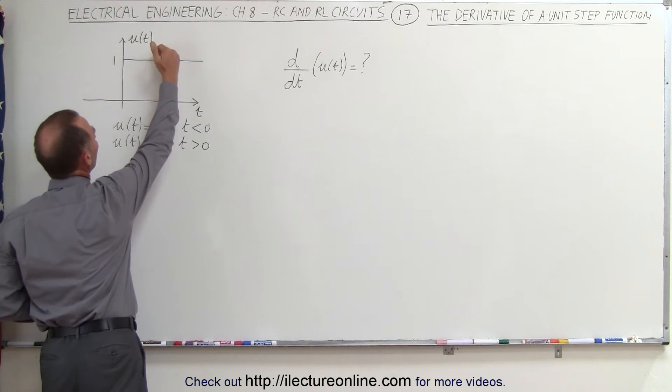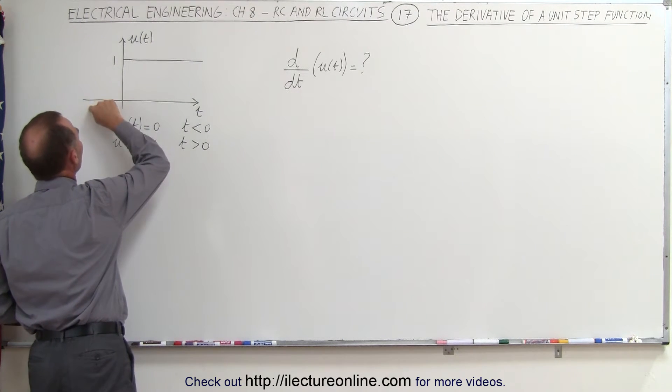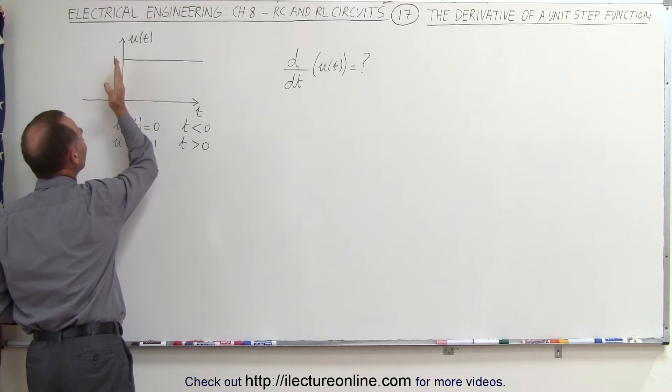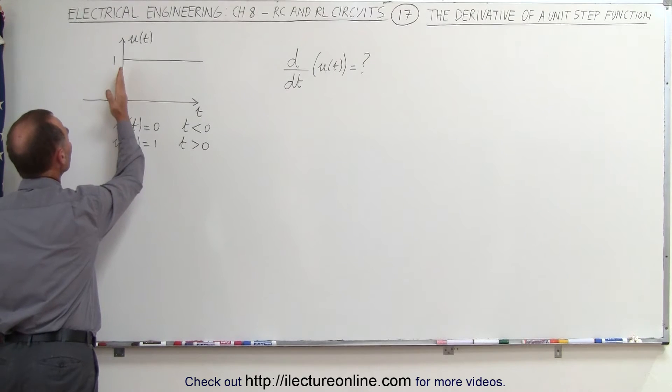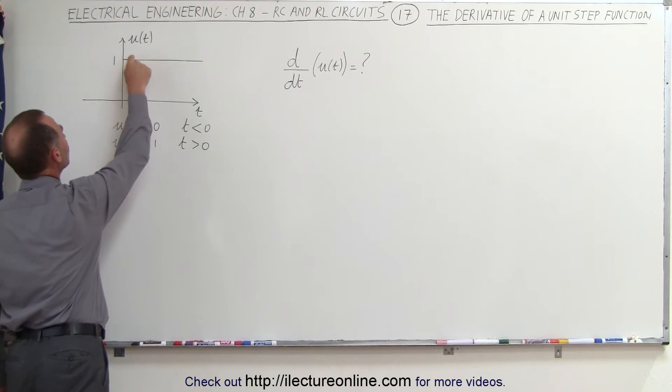It's equal to 0 over there, which means the derivative on this side and that side of time equals 0 is equal to 0. But what is the derivative at this very moment when we change from 0 to 1?